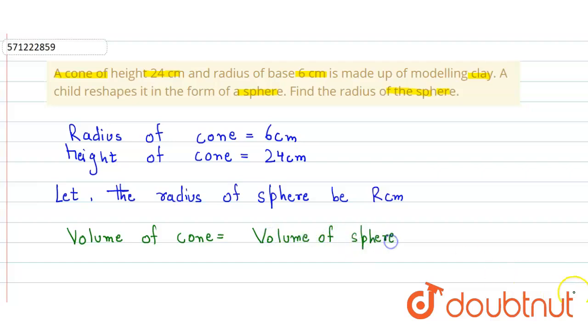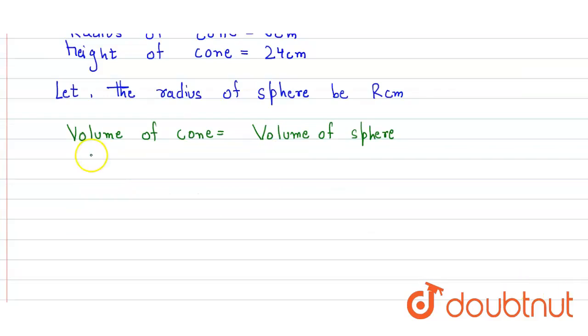The volume of cone formula is (1/3)πr²h, where h is height, and sphere volume is (4/3)πr³.